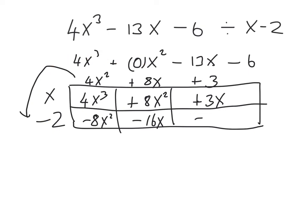Again we multiply the 3 by the minus 2 to get minus 6 down here. Finally we ask ourselves what do we add to minus 6 to get minus 6. We add 0. The 0 signifies that we have the right answer. We have a 0 remainder. That means that the answer is 4x squared plus 8x plus 3.